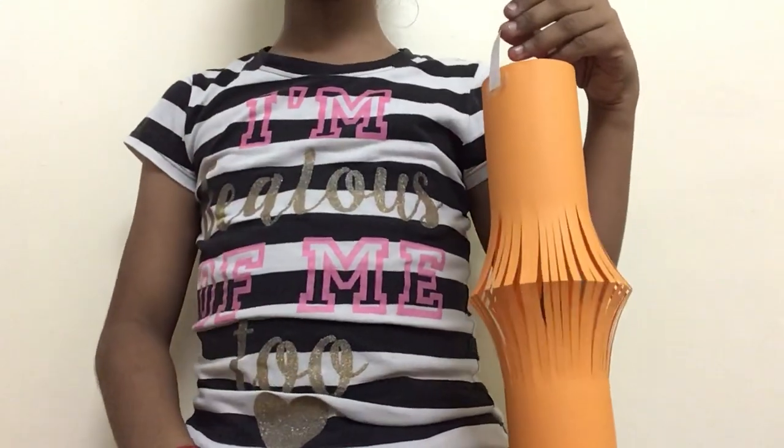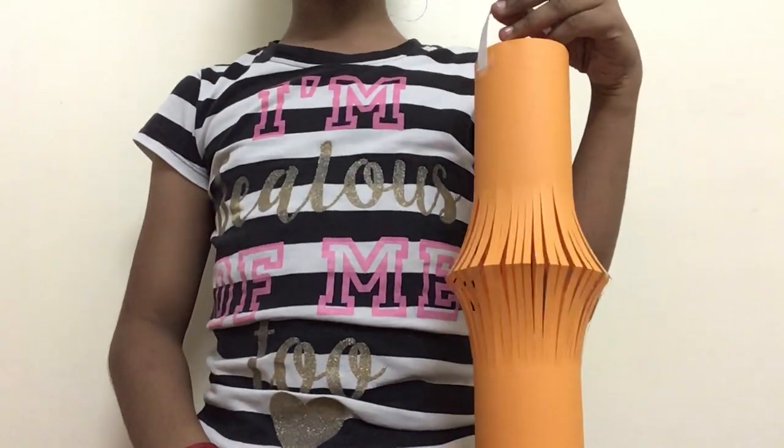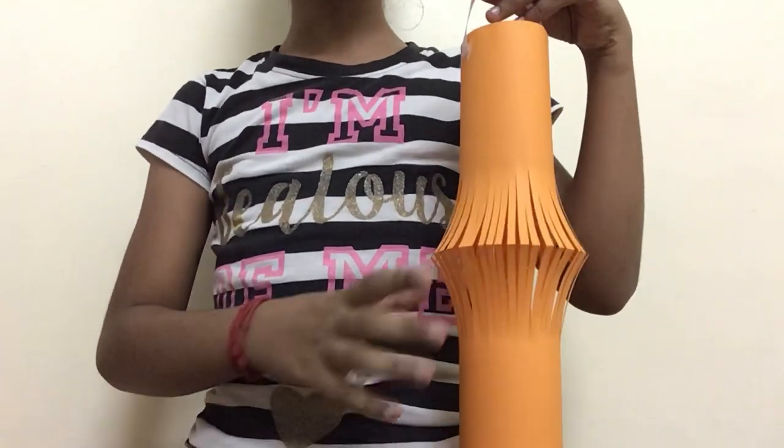Hi guys, welcome back to Crafty Kids. In this video we are going to be seeing how to make a paper lantern. So let's get started. For this activity we need a sheet of color paper—I'm picking orange, you can take any piece of paper you'd like.